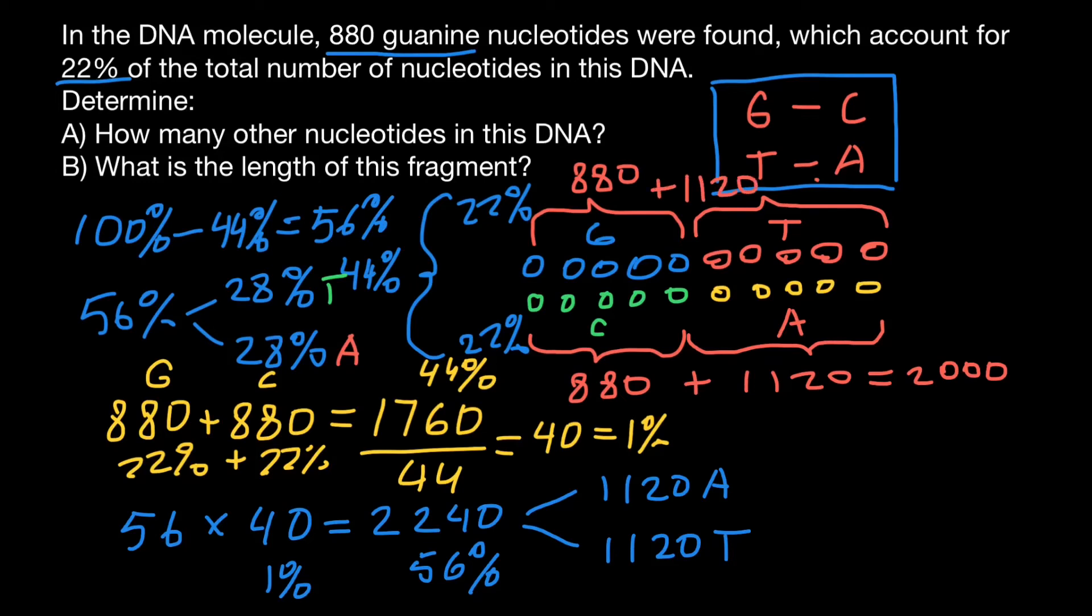And this would give us the length of this double-stranded DNA, which is going to be 2,000 base pairs. Not bases, but base pairs. Because total number of bases is going to be 2,000 on one strand of the DNA, and 2,000 on the other strand of the DNA. So the length of the double-stranded DNA is going to be 2,000 base pairs. But total number of the bases in this double-stranded DNA is going to be 4,000.